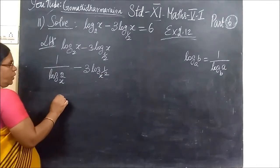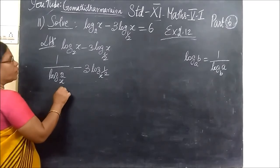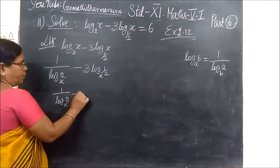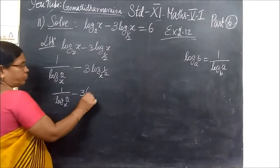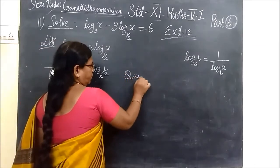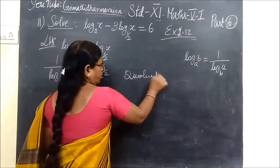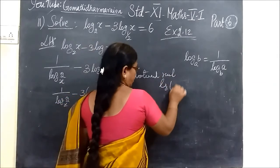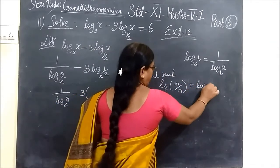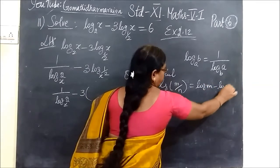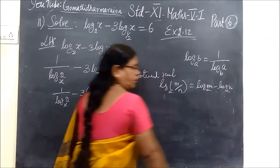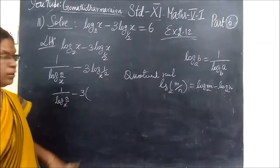So, now, you write 1 by log 2 to the base x minus 3 by 1 by log 2 to the base x. So, log M by N. This is equal to log M minus log N.